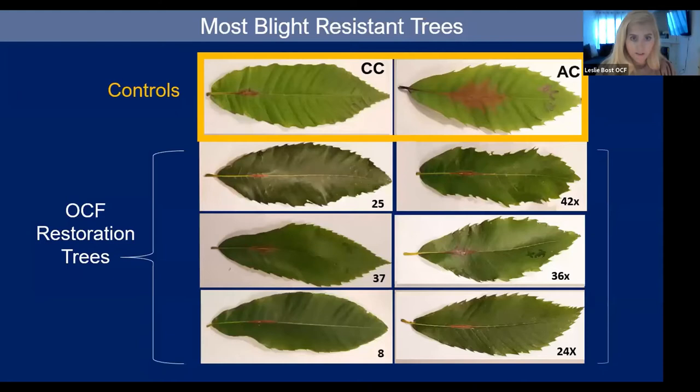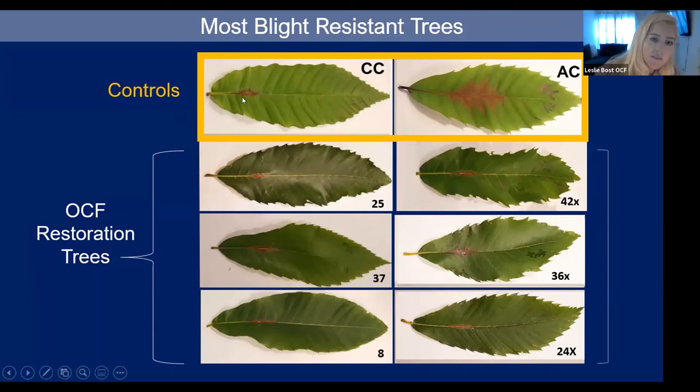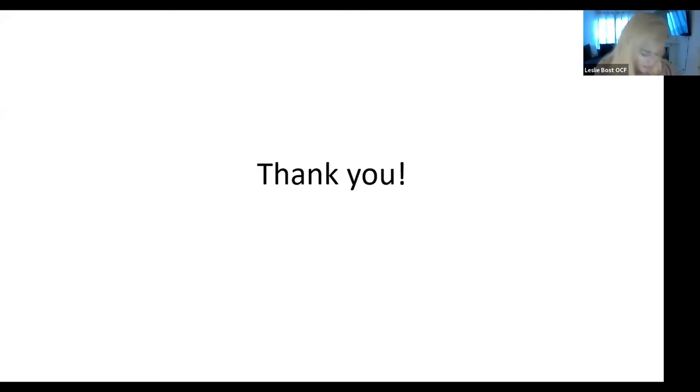Here's a graphic showing our Chinese chestnut and American chestnut controls. You can see the very large necrotic area on the American chestnut and the very small area on the Chinese chestnut. Down here are our most resistant trees - you can look at the necrotic area and it's just awesome. Those are our top six resistant trees. Thank you guys so much, and if you have any questions I would love to answer them.